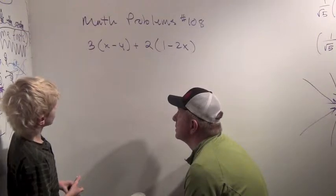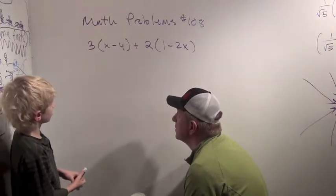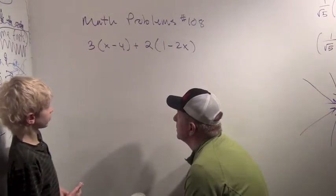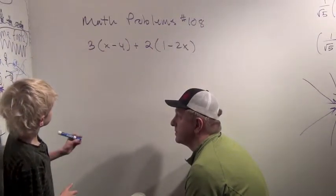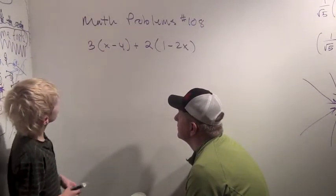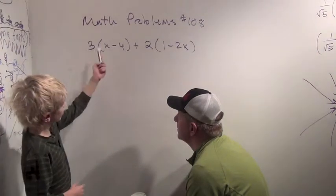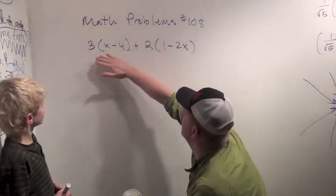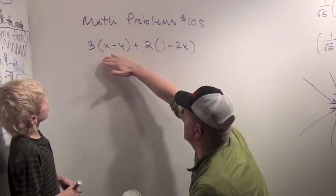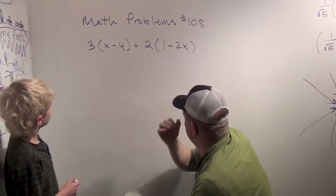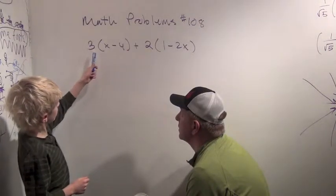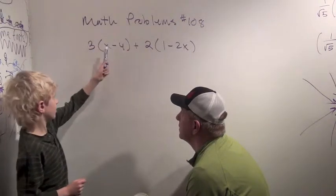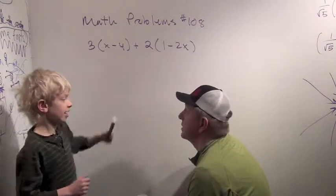Well, order of operations says add and subtract from left to right outside the parentheses. Yeah. Then, well, but there's three times this plus two times that. Yeah. What do you think three times this means? Maybe it means I think it means three times whatever this is plus two times whatever that is.